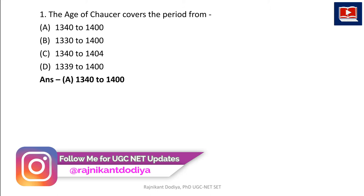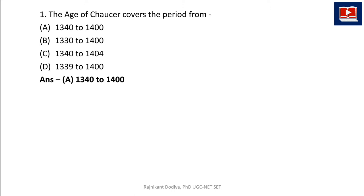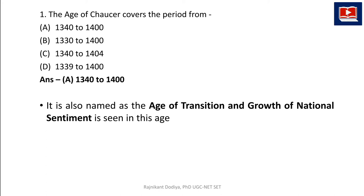Geoffrey Chaucer was born in 1343 in London and died in 1400 in the same city, living around 57 years. This timeline is considered the Age of Chaucer in the history of English literature. It is the first significant and most important period of English literary history, also named the Age of Transition, during which growth of national sentiment was also seen.